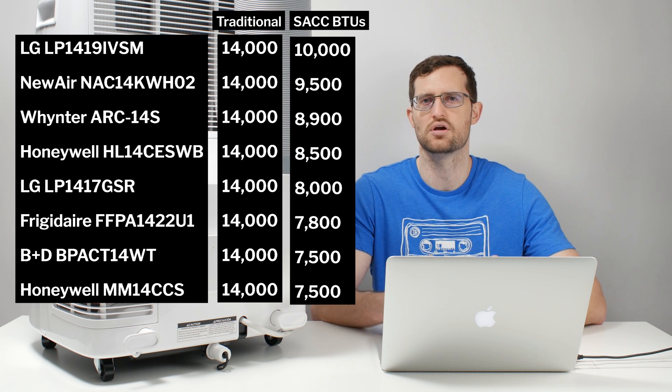We even have an LG unit at 8,000 BTUs on the seasonally adjusted cooling capacity scale. So we have a number of different brands represented, a number of different models represented, and the truth here is that we would not recommend any of these models based on that low seasonally adjusted cooling capacity. You are paying a premium for a 14,000 BTU unit and for you to get that low of cooling capacity when you're paying the 14,000 BTU price is simply not acceptable in our opinion.